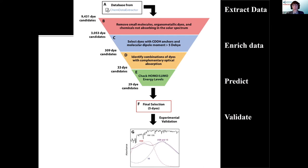We also looked at synthetic practicality — how easy are these things to make? That's a very practical question: a 20-step reaction with 0.1% yield is far less commercially viable than a one-pot reaction with 98% yield. Considering that practicality led us to just five dyes as our predicted lead candidates for light harvesters for photovoltaic applications.